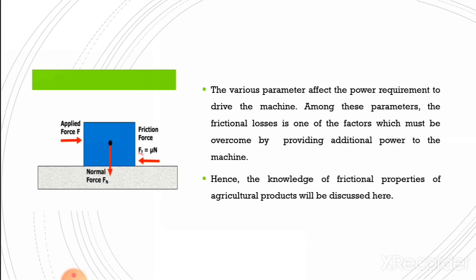This diagram shows the concept of friction. A block is placed on a horizontal surface. The weight of the block acts in a downward direction, where F is the applied force, and frictional force FR is equal to mu into N.